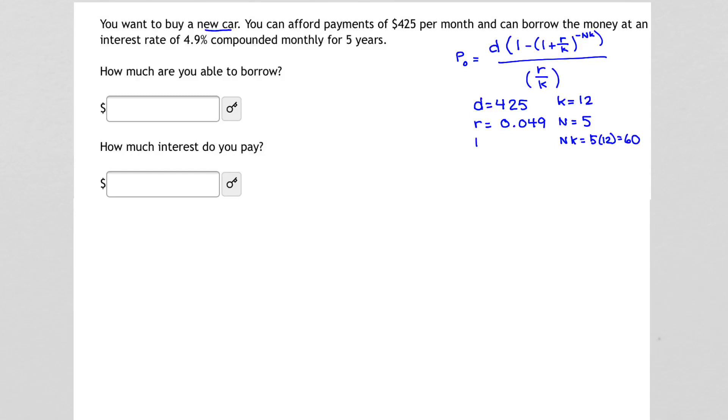What about P0, P sub 0, our loan amount? Well, that's actually what we're trying to figure out. How much do we want to borrow? So let's put all of these bits, all of these numbers, into our formula and get an expression.